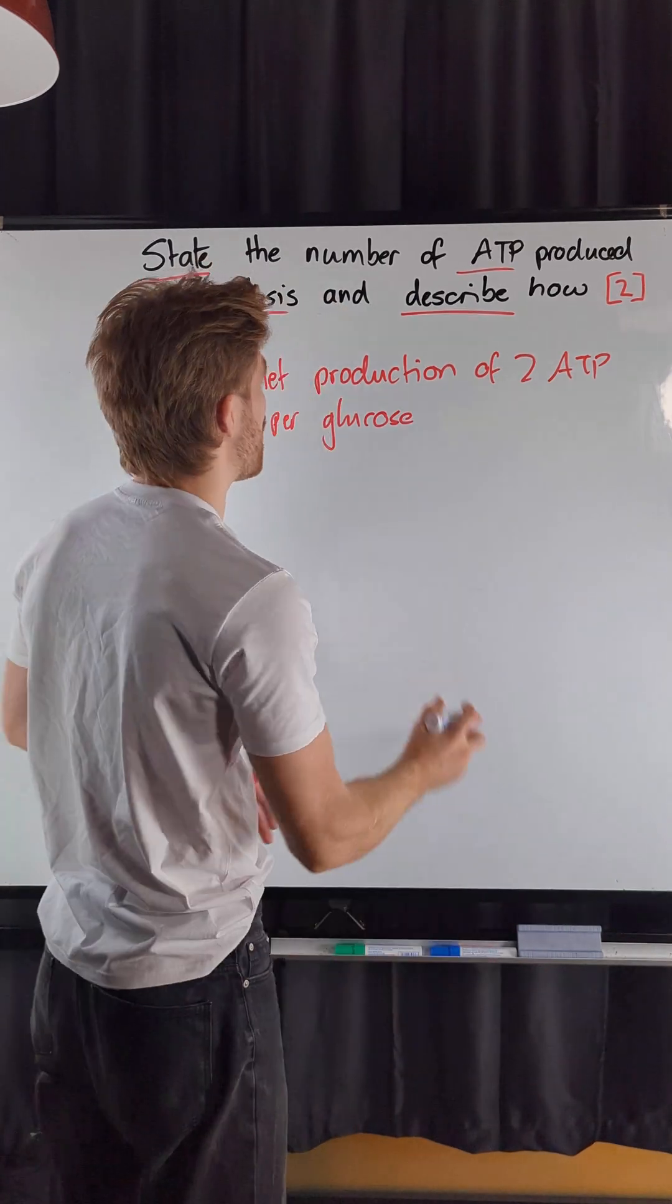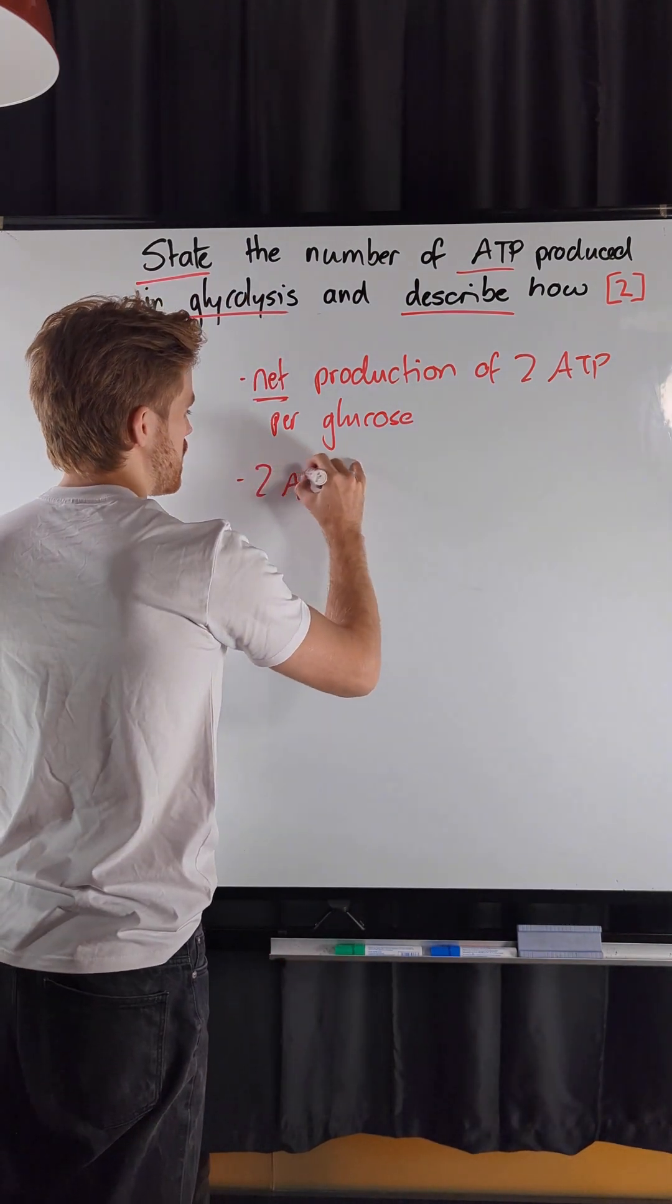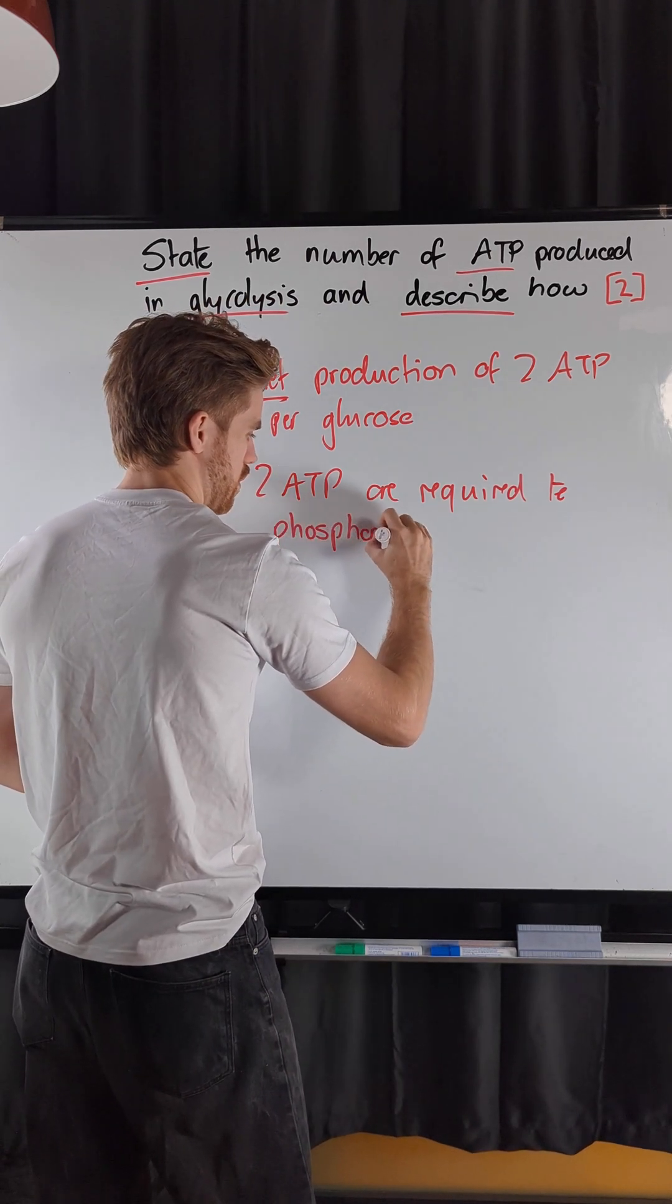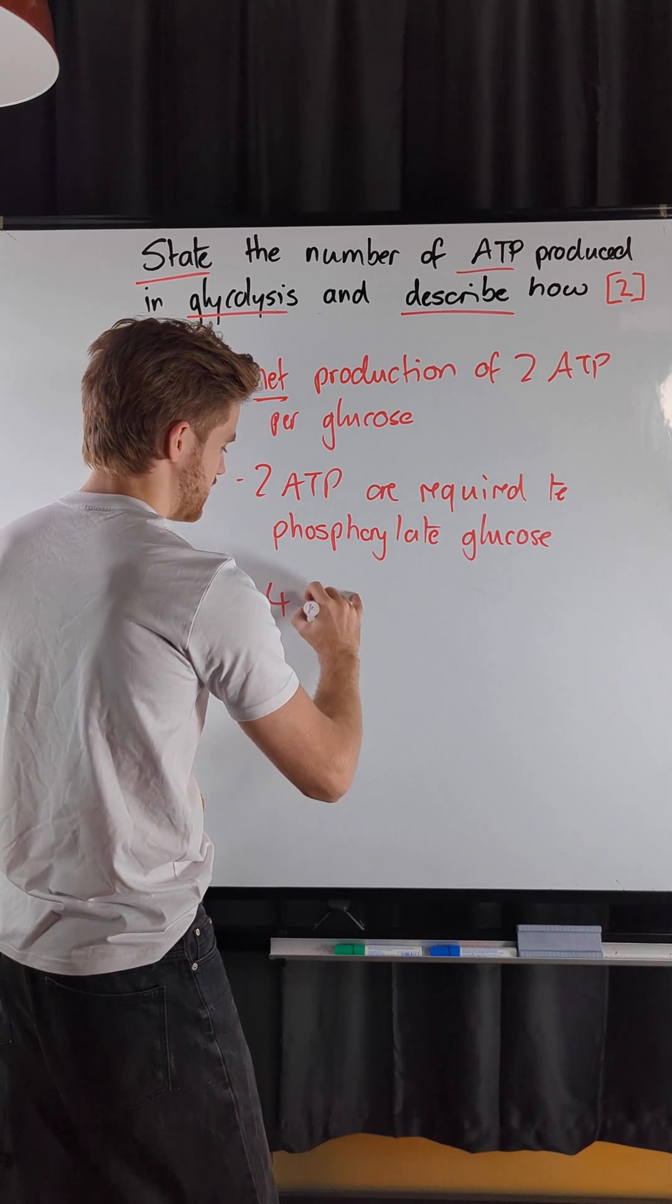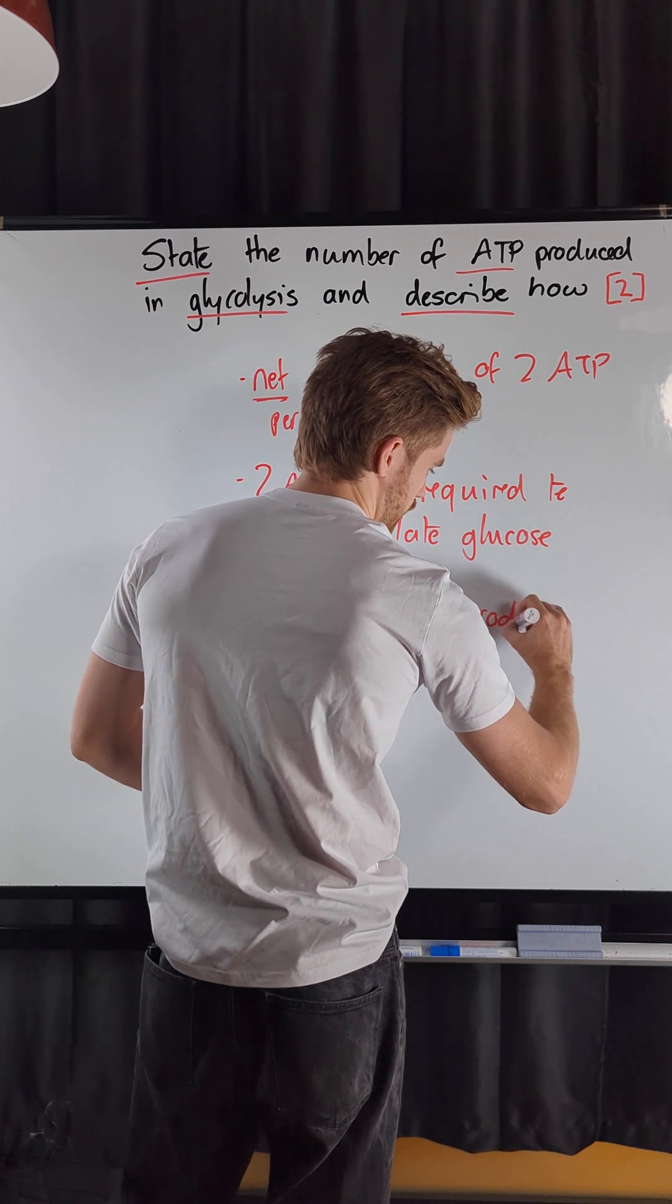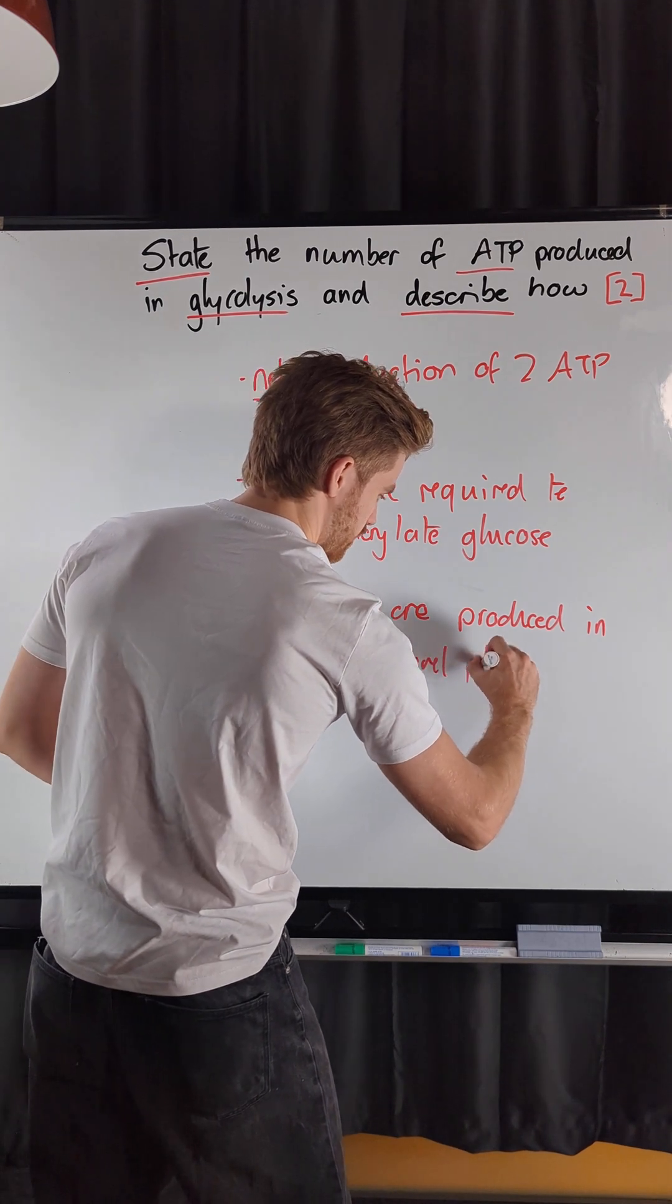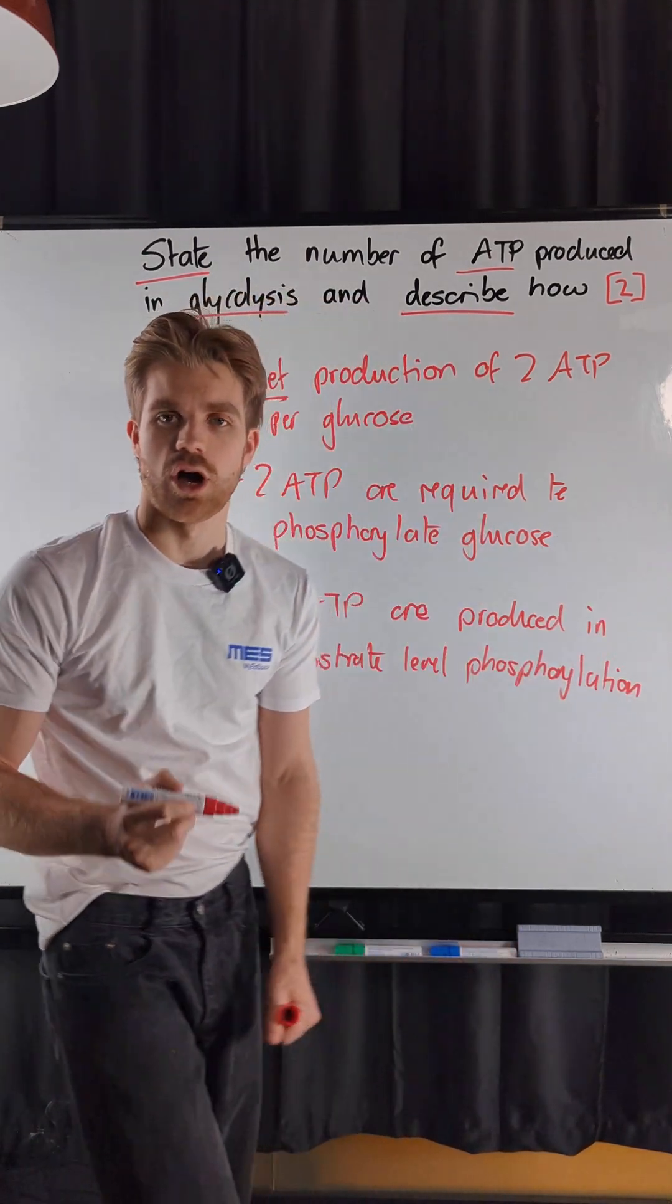So how do I get my second mark? Well it's going to come from describing what we mean by net production. Two ATP are required to phosphorylate the glucose, but four ATP are produced in substrate level phosphorylation. And the substrate level phosphorylation occurs during the oxidation of the triose phosphate.